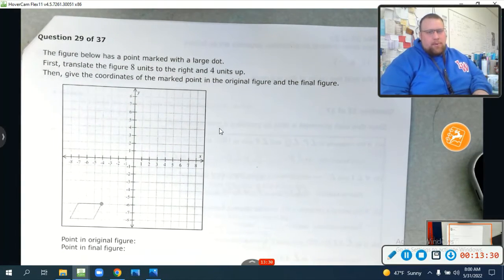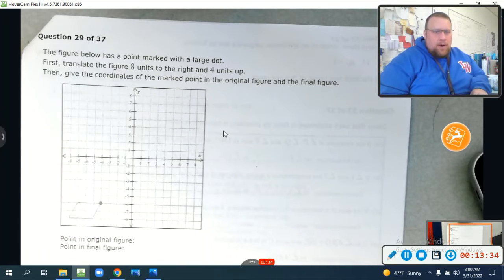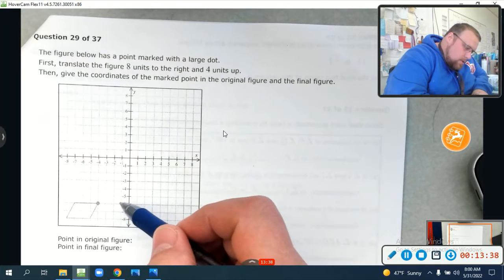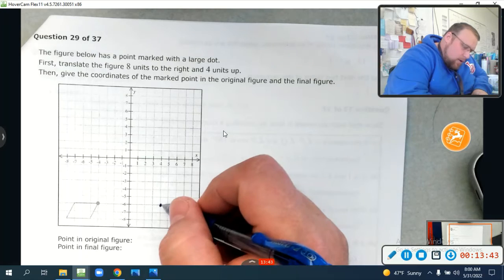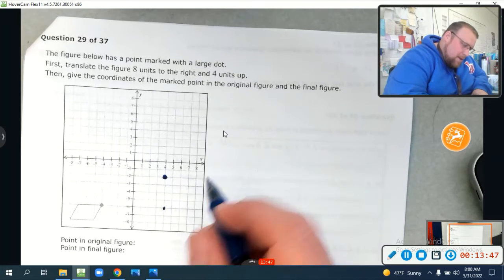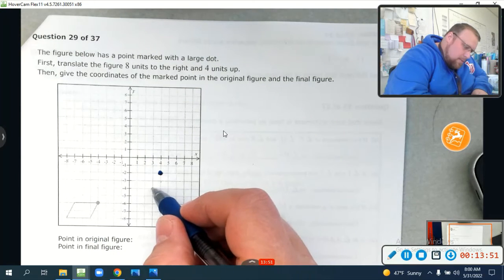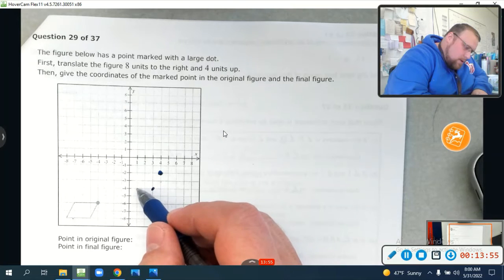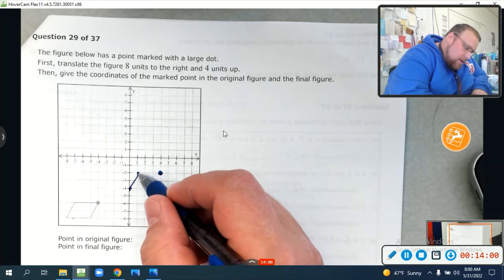The figure below has a point marked with a large dot. First, translate the figure eight units to the right and four units up. Let's see. One, two, three, four, five, six, seven, eight. What am I doing? And then four units up. One, two, three, four. Here's the point. And we're going to do that with all of them, right? So, down two, back one. Down two, back one. Left. One, two, three. One, two, three. Up two over one. Up two over one. Boom. Right there.